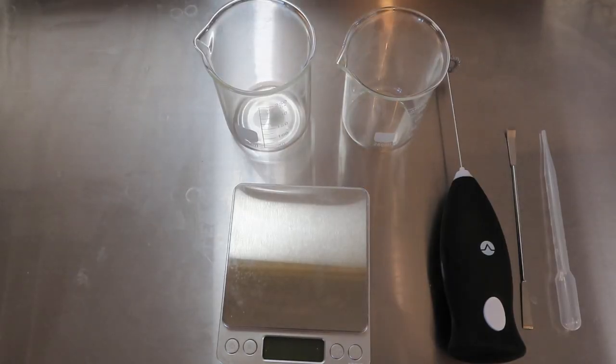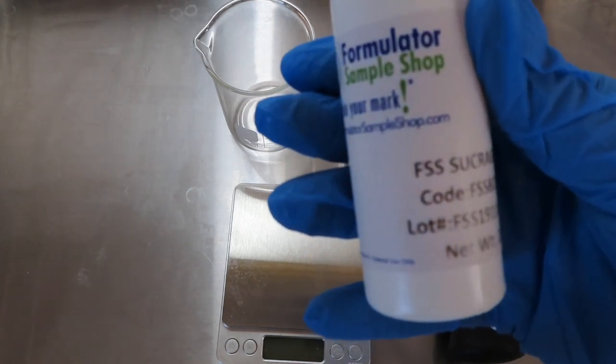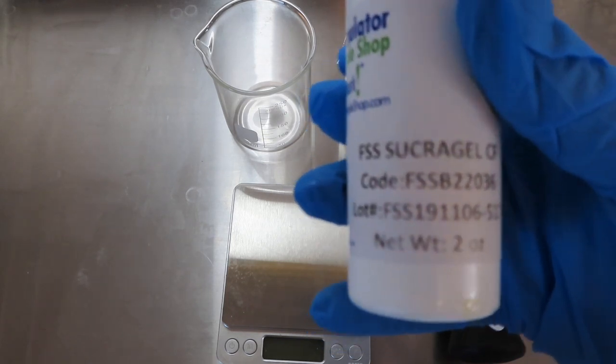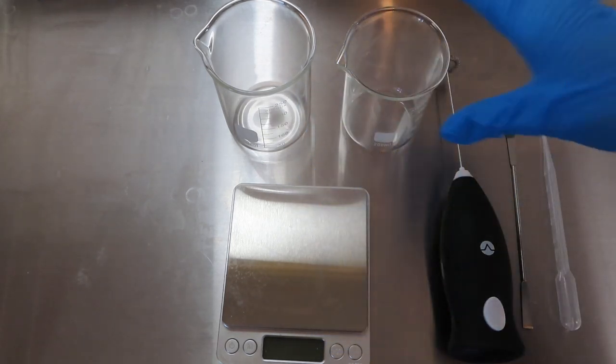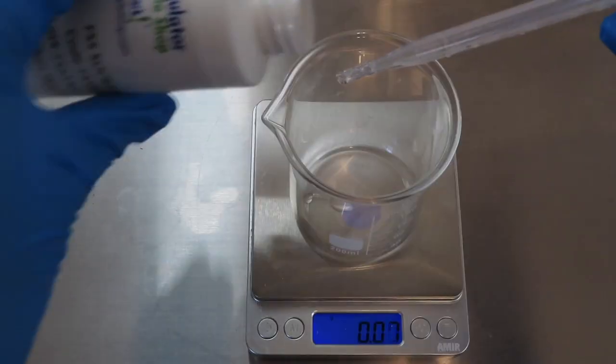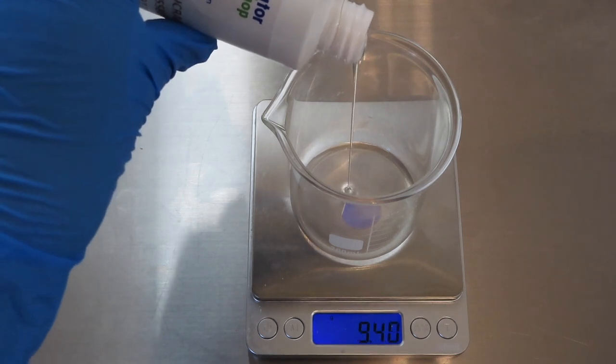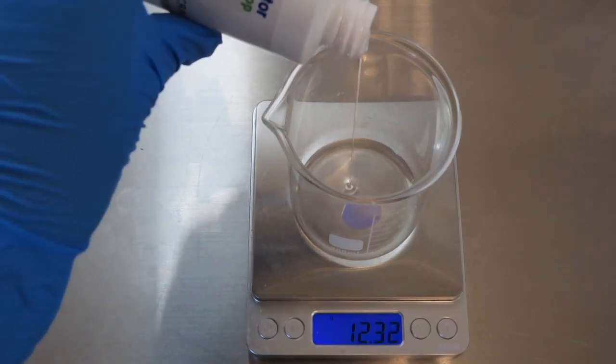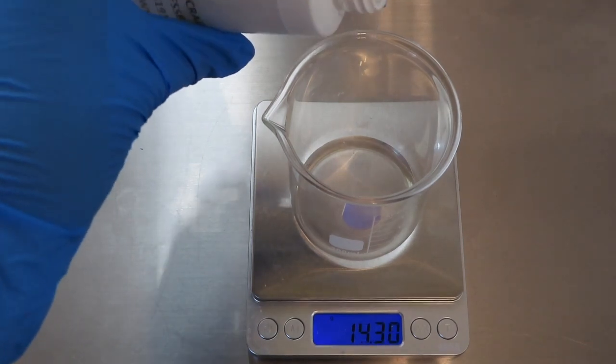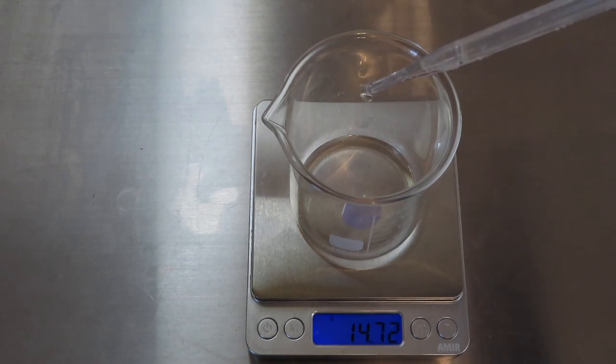Starting out, you'll need a few beakers, your scale, a small immersion blender, and a pipette. I got this from Formulator Sample Shop. This is a small one; I have a larger one as well, but it's quite expensive, so keep that in mind. In my 200 milliliter beaker, I'm going to put that on the scale and start adding my sucra gel. It has a thicker consistency but pours out pretty easily. Add the exact amount that you want.